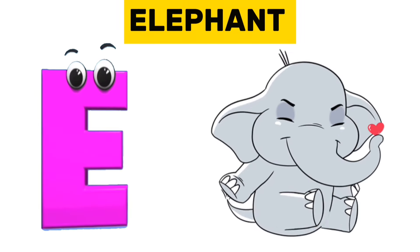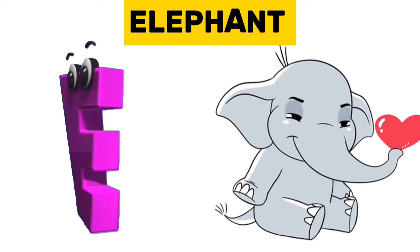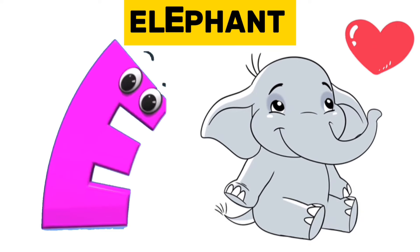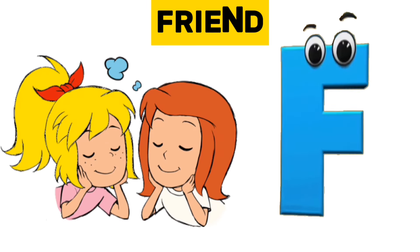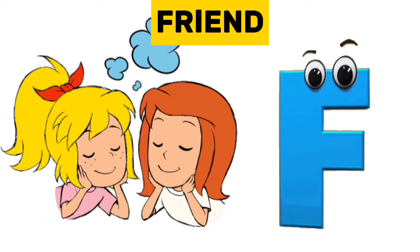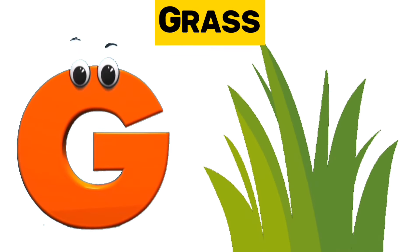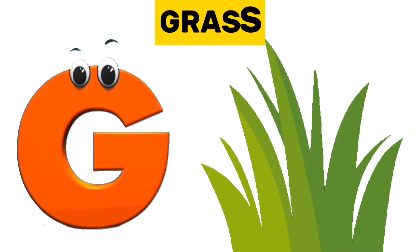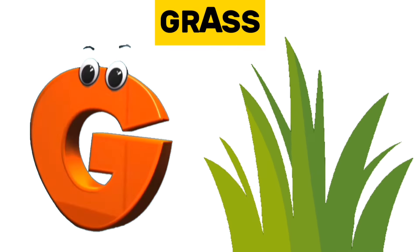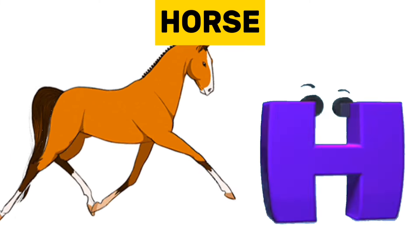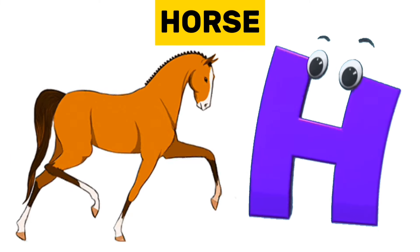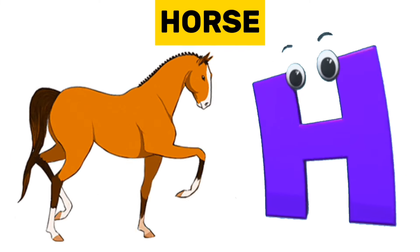E is for elephant. E, elephant. F is for friend. F, friend. G is for grass. G, grass. H is for horse. H, horse.